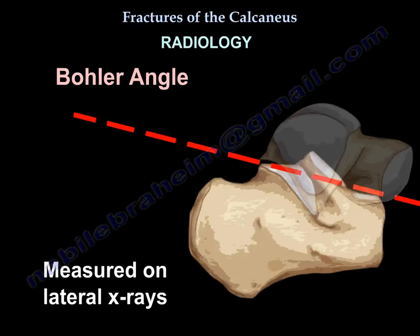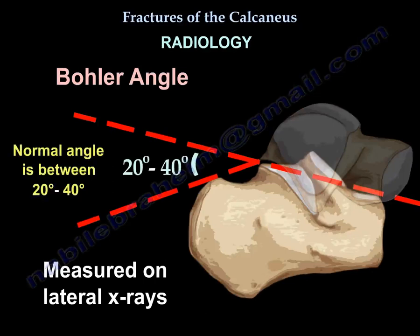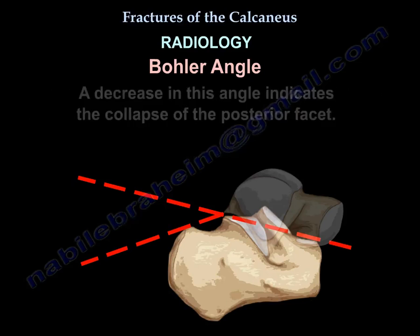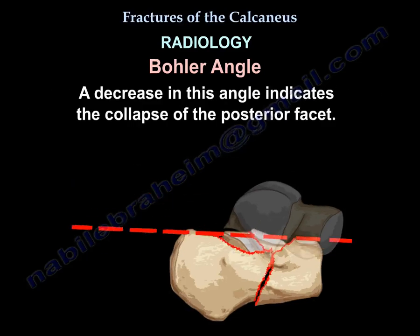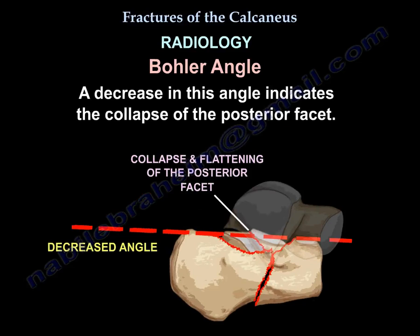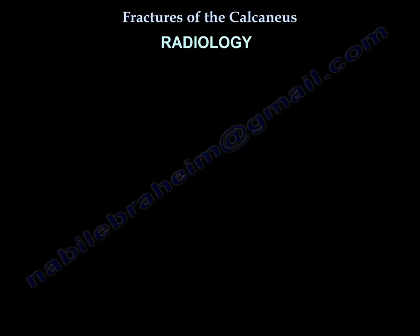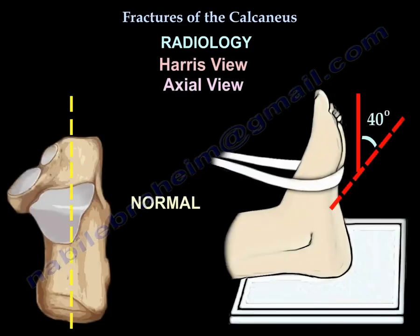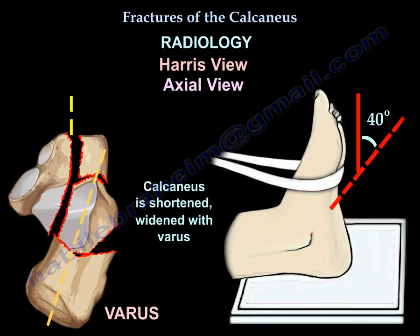Regarding radiology: Böhler's angle is measured on lateral X-ray and is normally about 20 to 40 degrees. A decrease in Böhler's angle indicates collapse of the posterior facet. The Harris axial view shows that the calcaneus is shortened and widened with varus deformity.